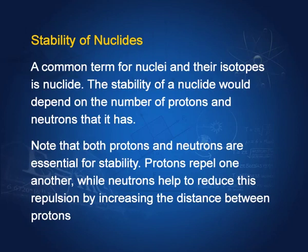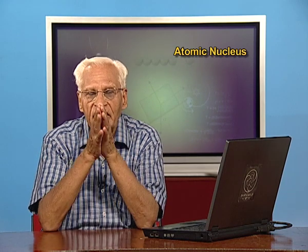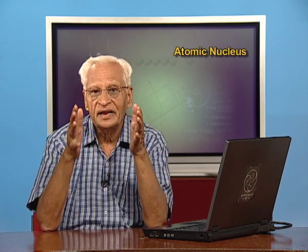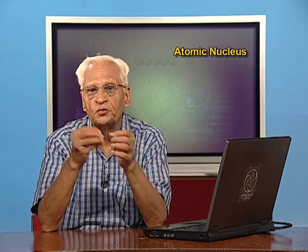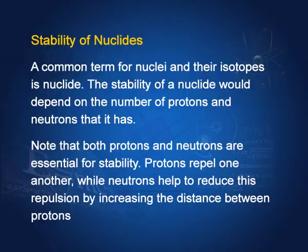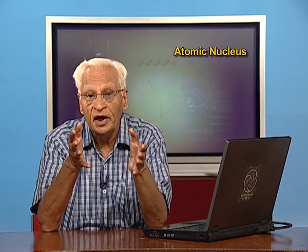A common term for nuclei and their isotopes is 'nuclide,' and the stability of a nuclide depends on the number of protons and neutrons. Both protons and neutrons are necessary in the nucleus. You cannot have a nucleus consisting only of protons — more than one — nor can you have a nucleus consisting only of neutrons.